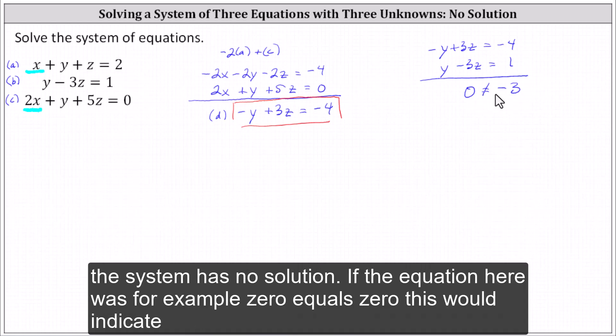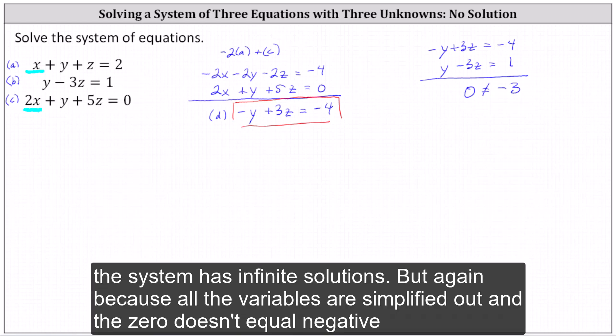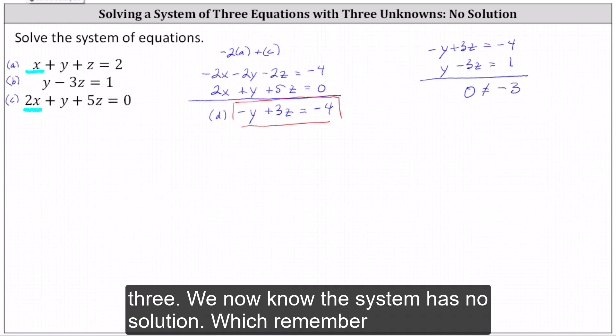If the equation here was, for example, 0 = 0, this would indicate the system has infinite solutions. But again, because all the variables are simplified out and zero doesn't equal -3, we now know the system has no solution.